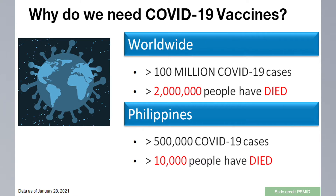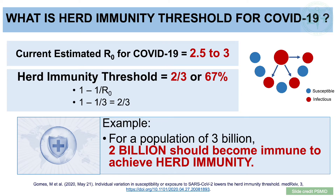For COVID-19, why do we need vaccines? The numbers explain it. Natural infection with COVID has already reached greater than 100 million cases with 2 million deaths worldwide, and in the Philippines alone, more than 500,000 cases with more than 10,000 deaths. We don't want these numbers to keep rising. Current data for SARS-CoV-2 suggests that around 70% of the population should be immunized to halt the spread of the disease. In simple terms, for a population of 3 billion, around 2 billion should become immune to achieve herd immunity.